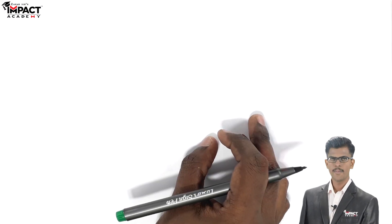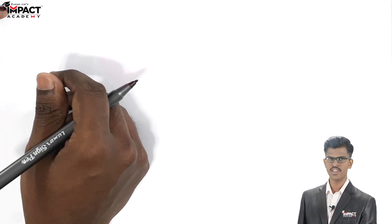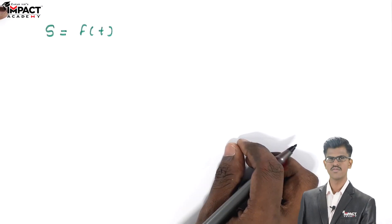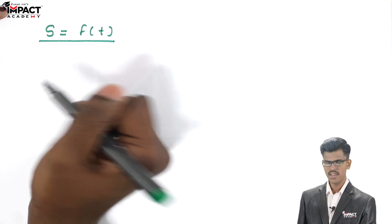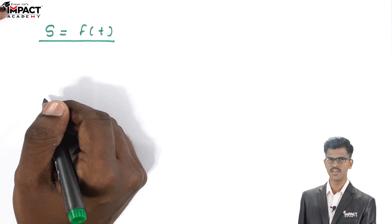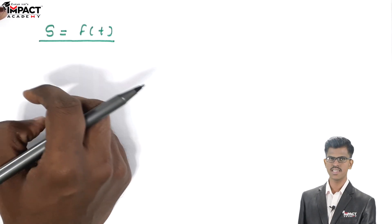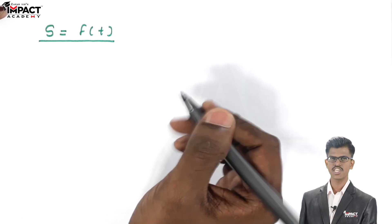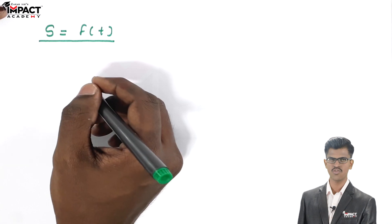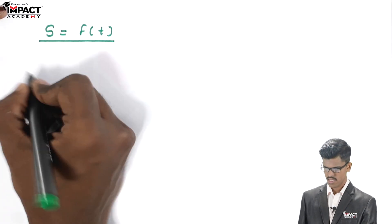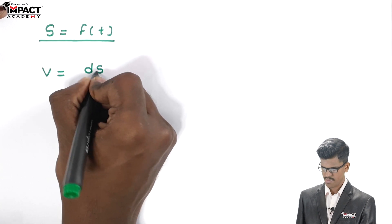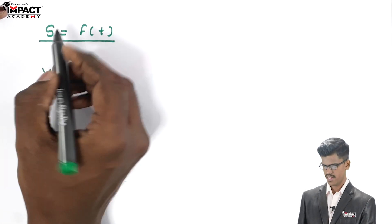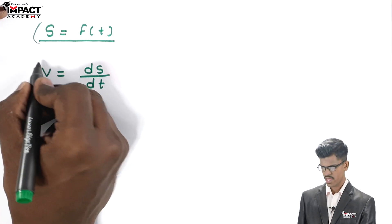So how do we solve this problem? In variable acceleration motion, the displacement or position is a function of T. If we know the displacement in the form of an equation of T and we need to calculate the velocity at an instant T, then by the definition of velocity — the rate of change of displacement with respect to time — V is equal to dS by dt. If we differentiate the displacement with respect to time, we get the velocity.